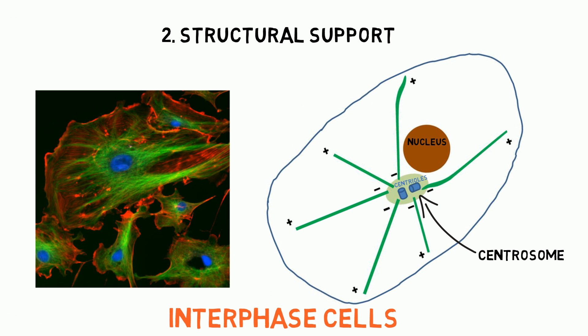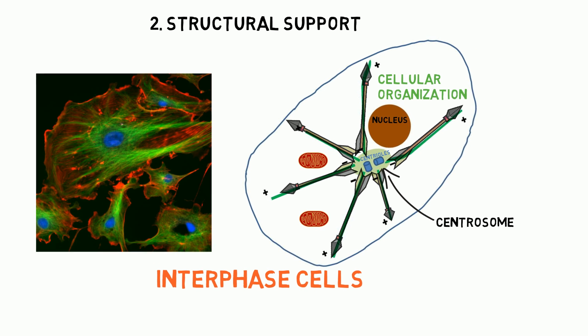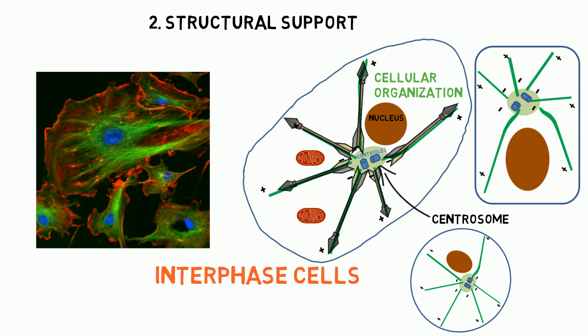In non-dividing cells, microtubule networks radiate out from the centrosome to provide the basic organization of the cytoplasm, including the positioning of organelles. The shape of many cells depends on the radial array of microtubules in the cytoplasm.